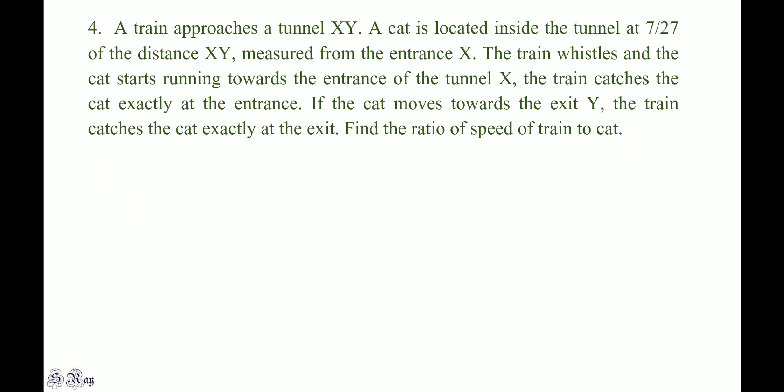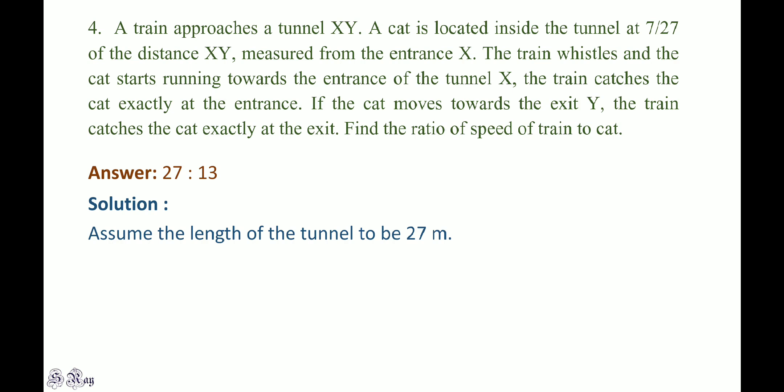A train X approaches tunnel XY. A cat is located inside the tunnel at 7/27 of the distance XY measured from entrance X. The train whistles and the cat starts running towards entrance X — the train catches the cat exactly at X. If the cat moves towards exit Y, the train catches the cat exactly at Y. Find the ratio of speed of train to cat. The answer is 27:13. Assume the tunnel length to be 27 metres for simplicity.